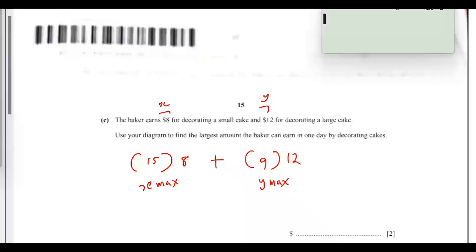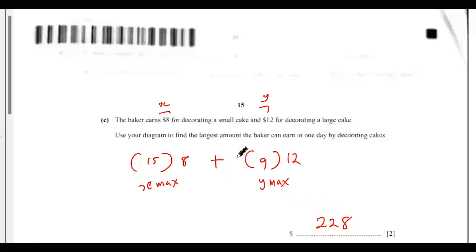If you input this into your calculator, we have 15 times 8. So we can open a bracket here, 15 times 8, then add another bracket, that is 9 times 12. So if you hit enter, we'll get 228. So the maximum will be 228 dollars.